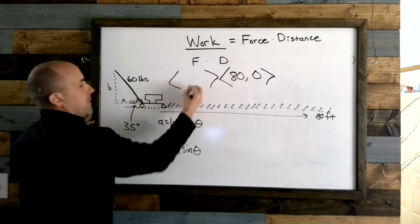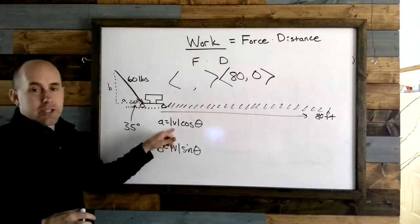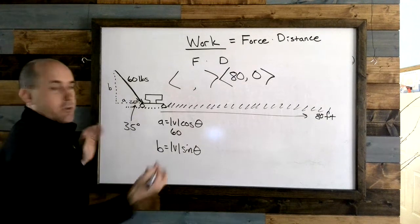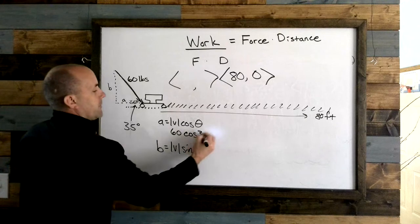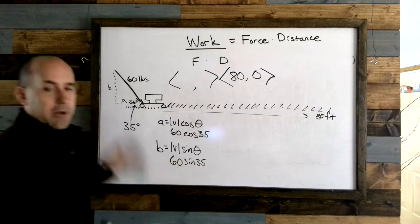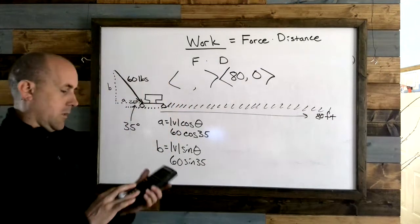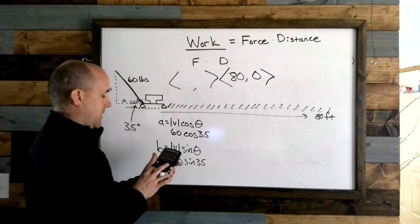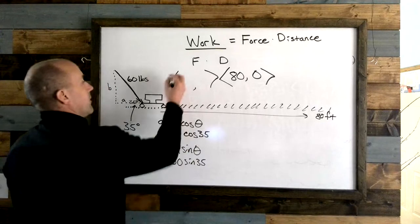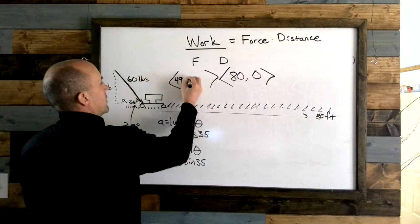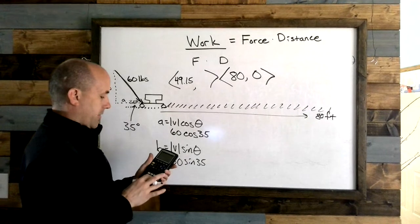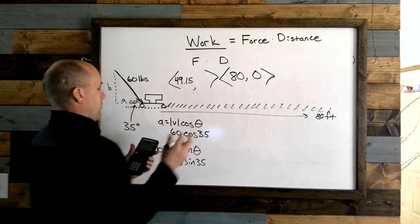The magnitude of your force vector is 60 times the cosine of 35 degrees, and then 60 times the sine of 35 degrees. I'm going to go ahead and grab my calculator, turn it on, and I have 60 cosine of 35 and I've got 49.15. And then I do 60 times sine of 35 and I get 34.41.